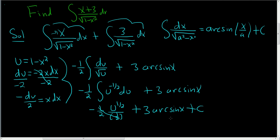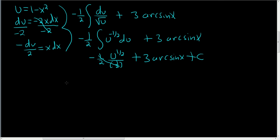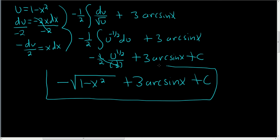To finish, we plug u back into what we have. We have negative square root, and u was (1-x²), plus 3 arcsin x plus C. And that is the final answer.